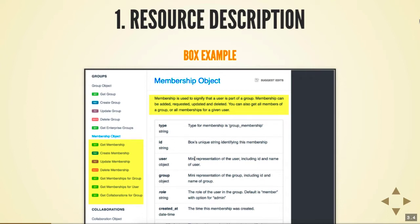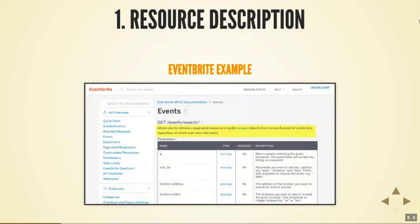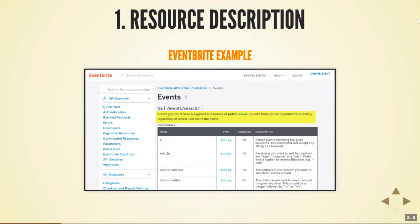Resource descriptions are usually action-oriented — membership is something you update with people. In Box's design model, they break out all the different actions you can do with a membership resource into different API endpoints: get membership, create membership, update membership, and so forth. One more example from Eventbrite: their events API describes it as 'allows you to retrieve a paginated response of public object events.' Again — short, action-oriented, can even be a fragment. That's essentially what a resource description looks like.